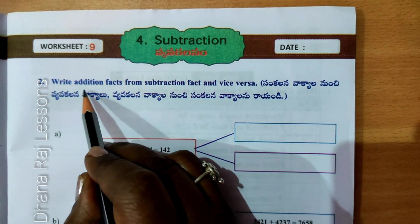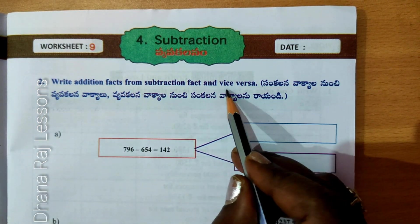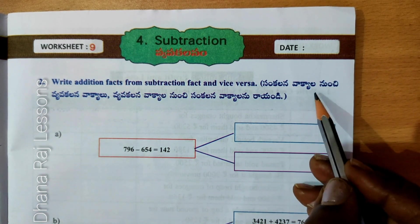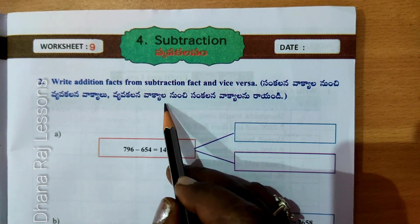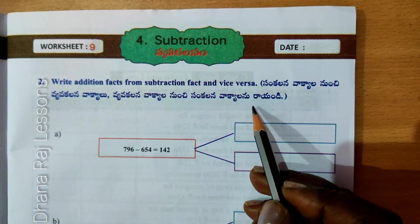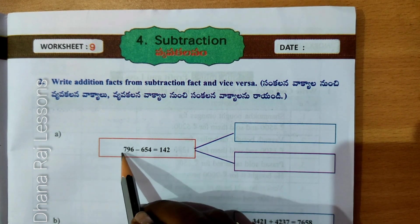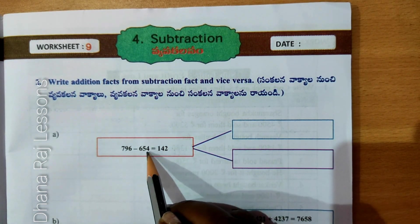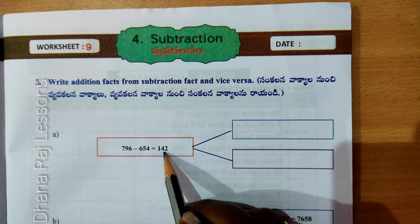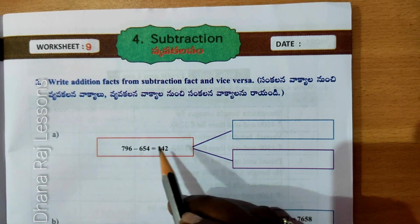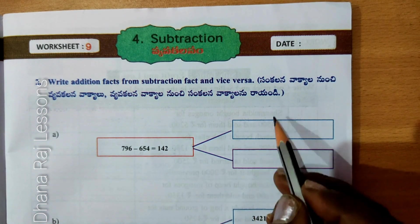Question 2: Write Addition Facts from Subtraction Facts and vice-versa. From Sankalna Vakiyalanu, write Vyavakalna Vakiyalanu; from Vyavakalna Vakiyalanu, write Sankalna Vakiyalanu. 796 minus 654 equal to 142 is given. This is the Subtraction Fact; from it we write the Addition Facts.